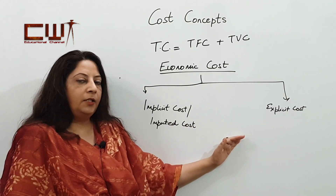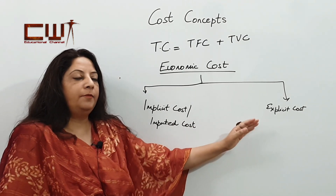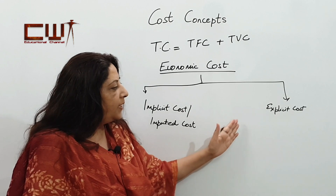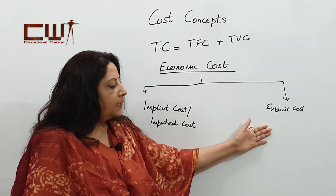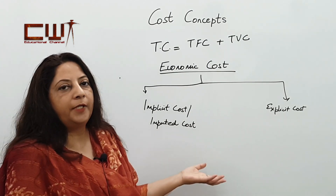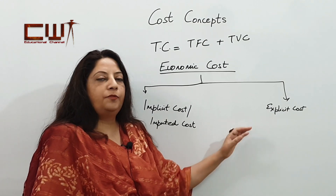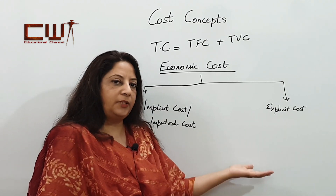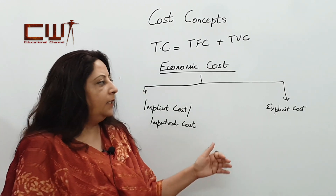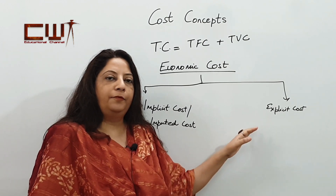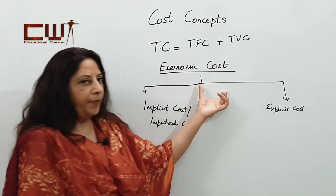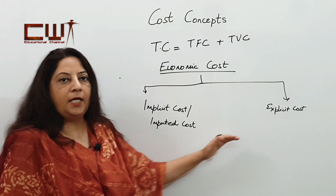Explicit cost, as its name suggests, comes from the word expressed. It is expressed or given to someone outside the business. For example, if we pay rent to someone outside the business — the owner takes property on rent and conducts business from that rented property — that rent is going outside the business, not to the owner but to a third party. So all costs which go to a third party — wages, telephone, rent, electricity — become explicit cost. Economic cost constitutes two main parts: implicit cost and explicit cost.